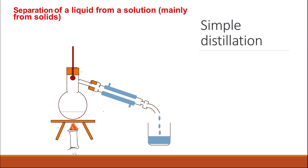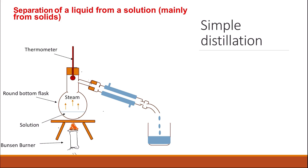What if we want to separate the liquid, not the solid? The first method we can use is simple distillation. Simple distillation is mainly used if you want to separate a liquid from a solution, especially if the solution contains only one solvent and a solid but you want the liquid. In simple distillation, you have your solution in a round-bottom flask and you heat it using a Bunsen burner. As you heat it, the steam or solvent will start to evaporate, and we have a thermometer at the top which gives you the boiling point of your solvent.